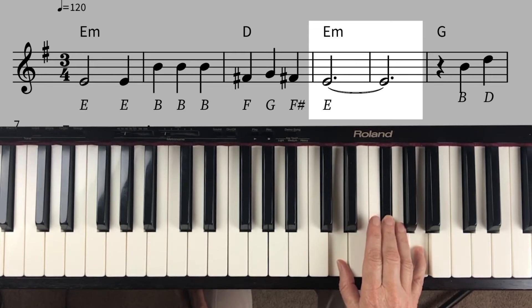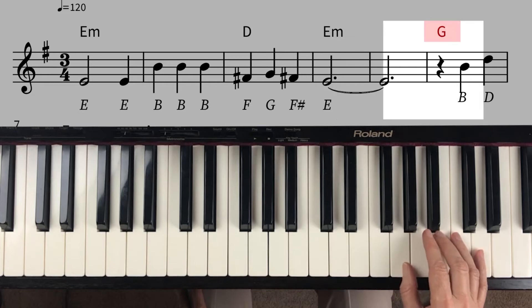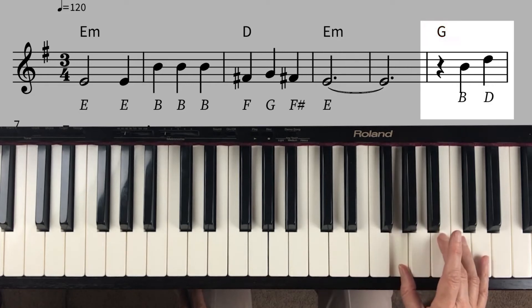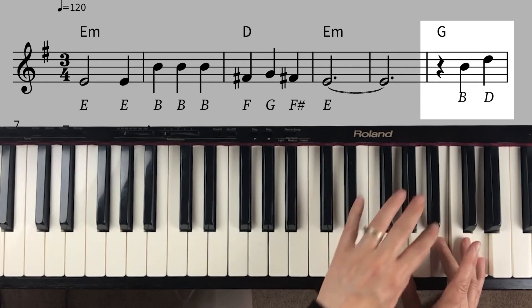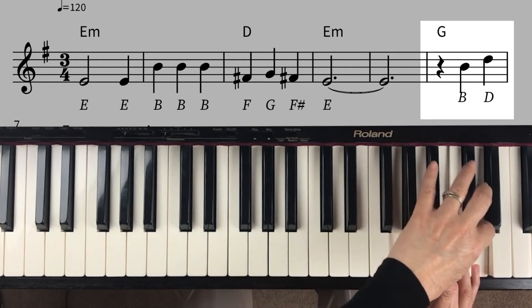And then we have G. So we put our thumb on G, and it's G, B, and D. You just follow that same rule: skip three keys, skip two keys.